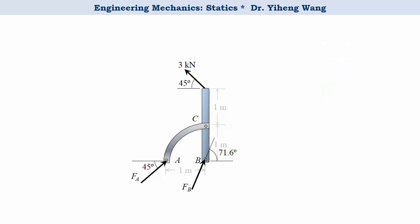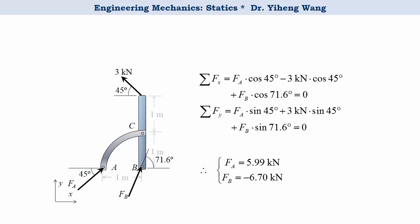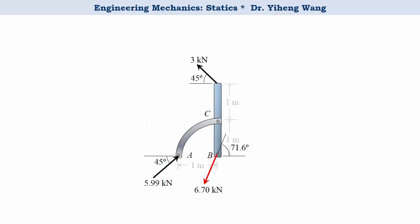Now we have a free body diagram with two unknowns. We can write two equilibrium equations to solve for both of them. Negative sign in force Fᴮ indicates that its direction is opposite to what we assume. Hopefully you've learned from this example that by identifying two-force and three-force members, we can effectively simplify our calculation.